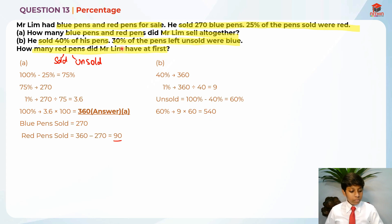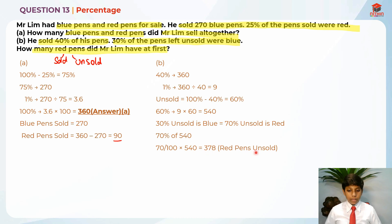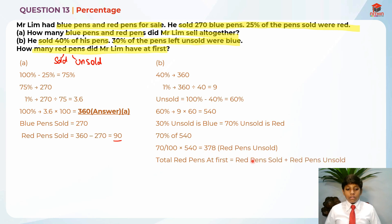We know that 30% of the pens left unsold were blue, which means 70% unsold is red. So we can find 70% of 540, which is (70/100) times 540, giving us 378. This is the red pens unsold. So to get the red pens at first, we take red pens sold plus red pens unsold: 90 plus 378, which gives us 468 as the answer for Part B.